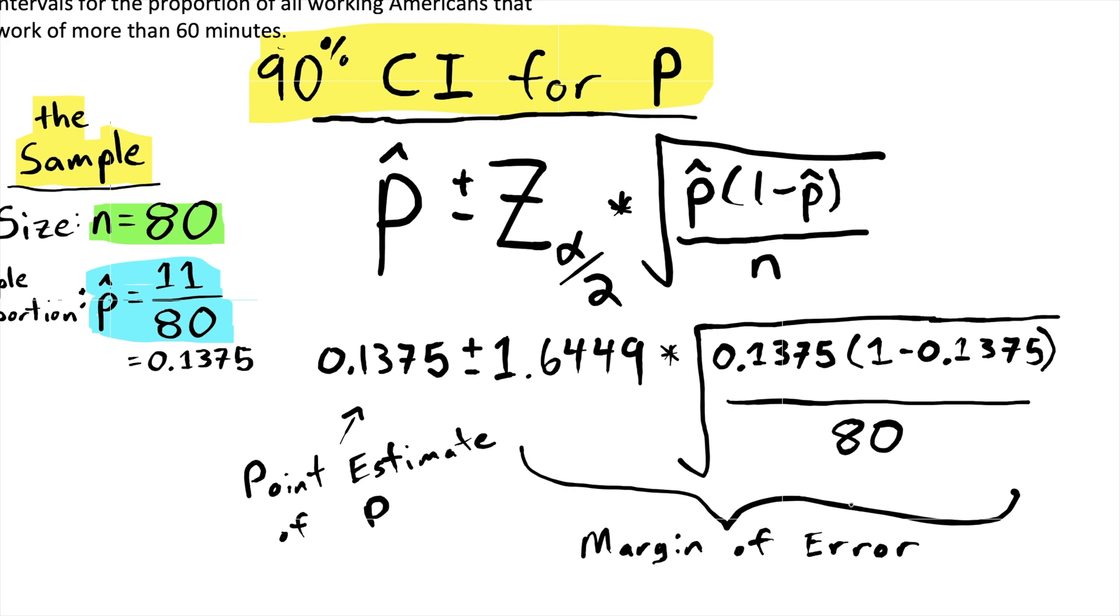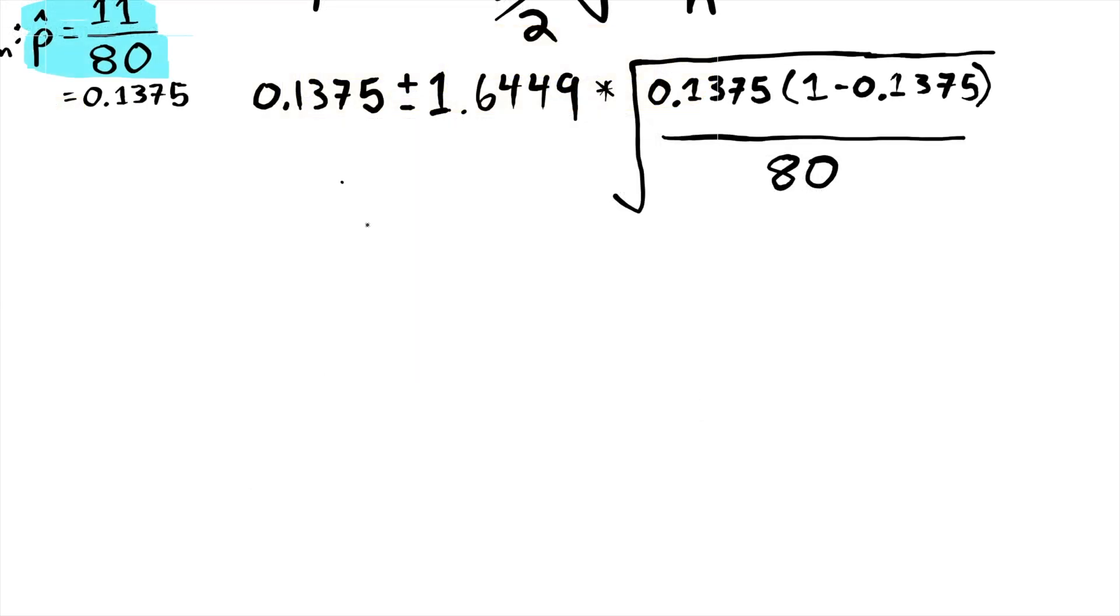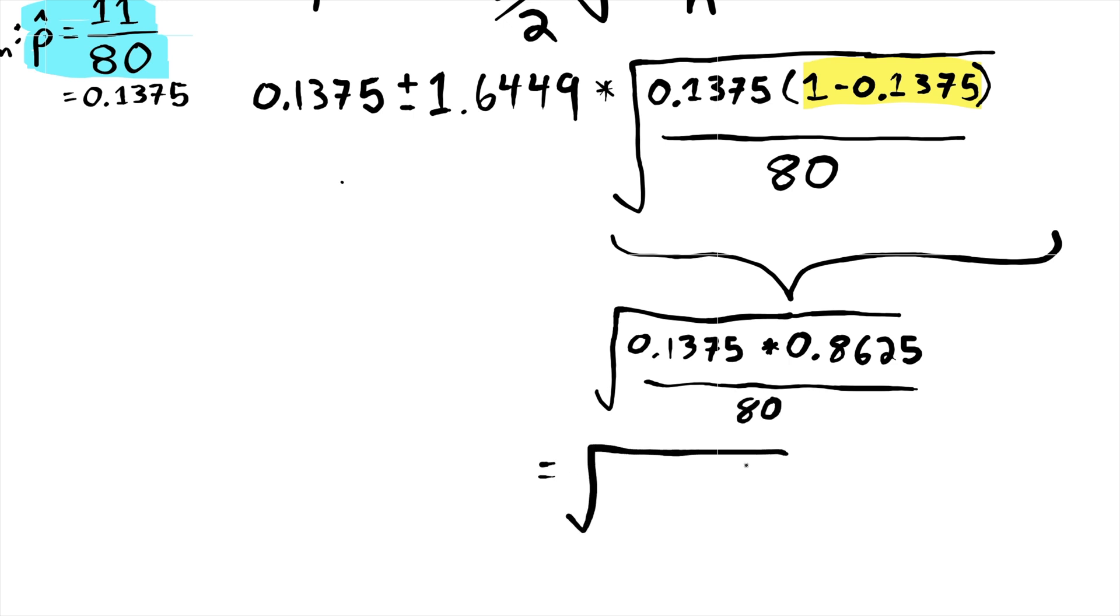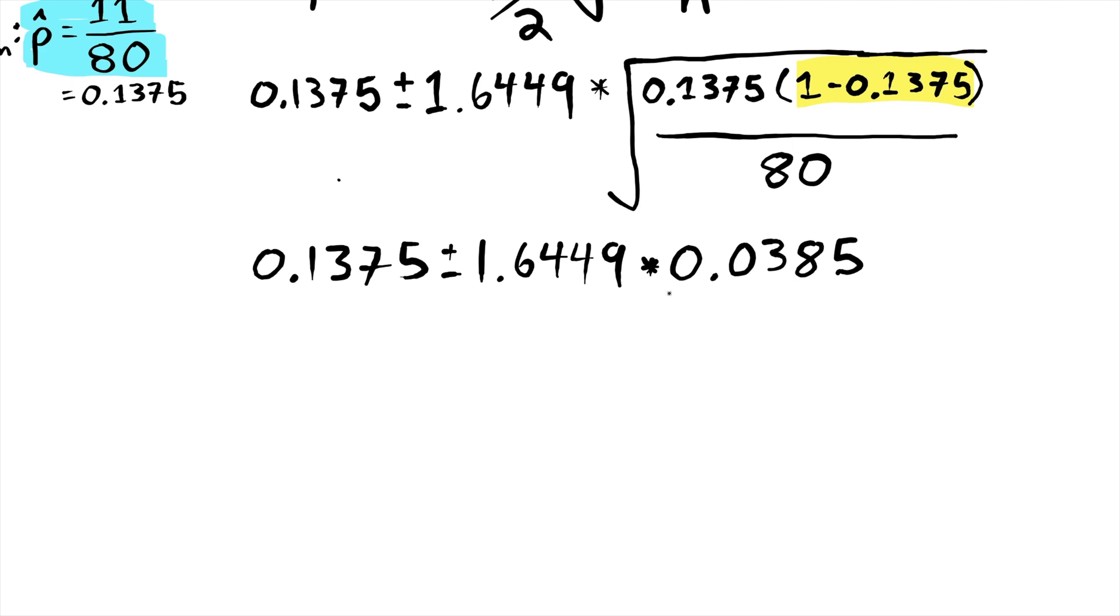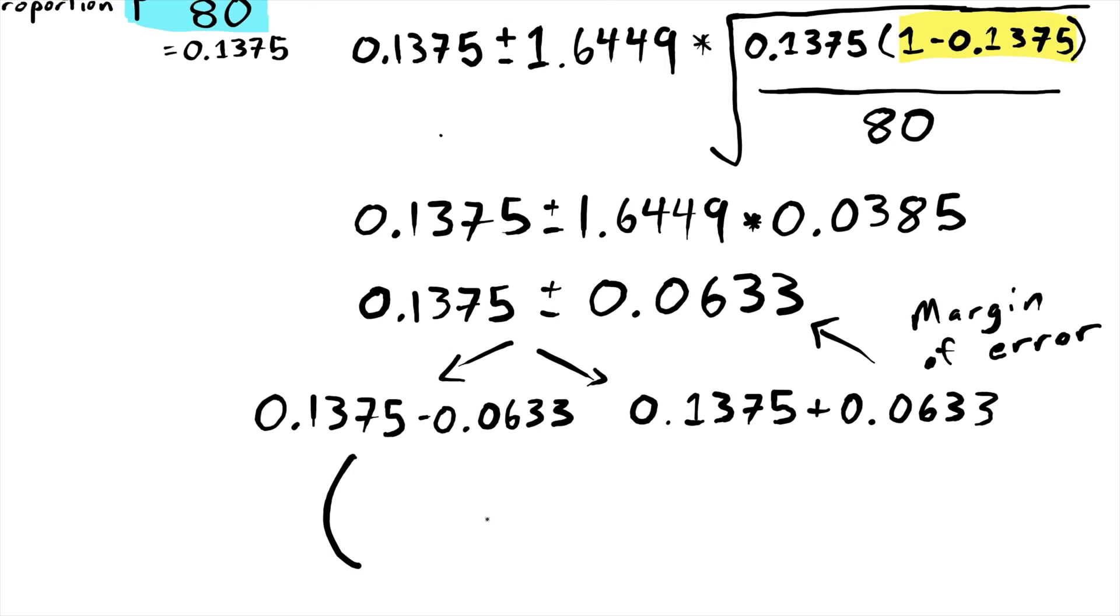So let's give ourselves some more room to work with and finish off this calculation. By mathematical order of operations, multiplication needs to come before addition. So we need to determine what the margin of error is first, and then the last thing we do is add and subtract that. I'm going to focus on this square root. So the first thing that I would do is this subtraction, 0.8625, and that's divided by 80. So then you can multiply these top two numbers together. Now we'll divide by 80, and then we're finally ready to take the square root. Now I'll multiply these two numbers together. And now we're ready to do the addition and subtraction. And the lower number which comes from this subtraction, 0.0742. And then the upper number comes from the addition, 0.2008. And I'm done.